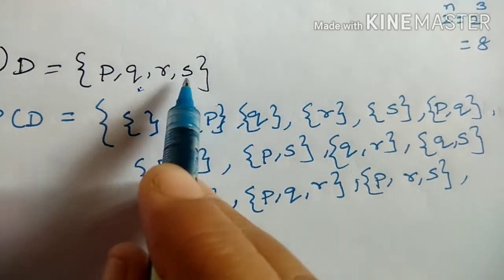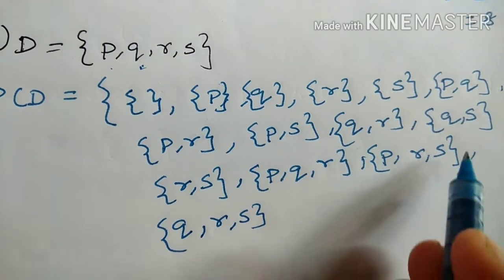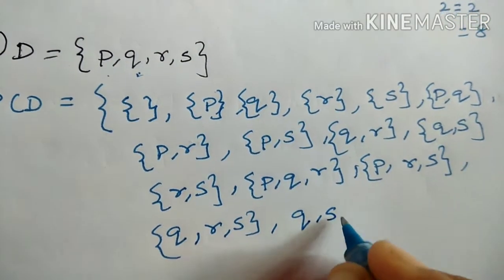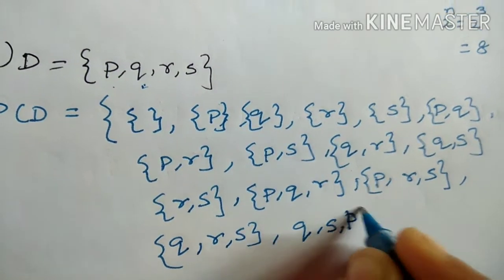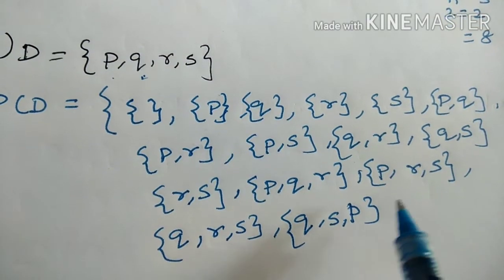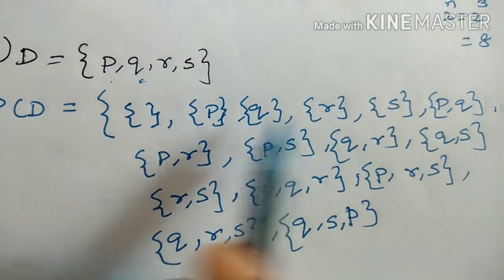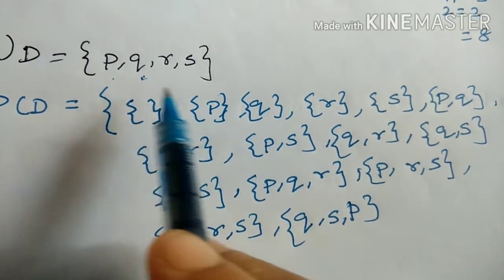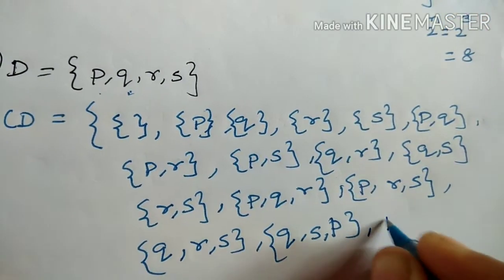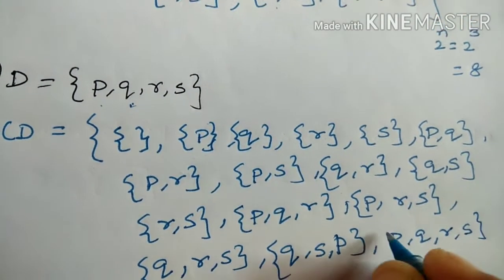Next, {Q, S, P}. If you look at Q, S, P, that's the same. Now, we have to write four elements. {P, Q, R, S}. This is a set bracket.